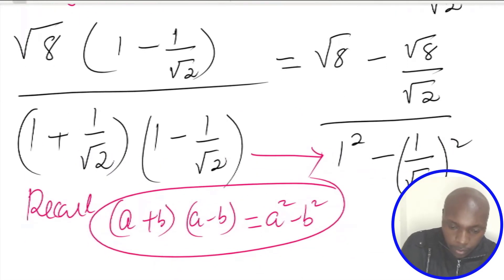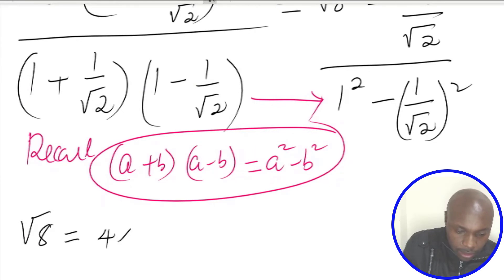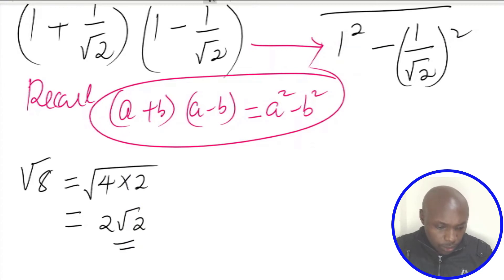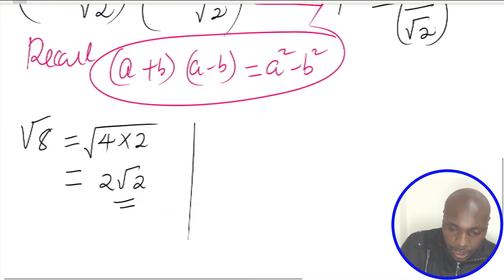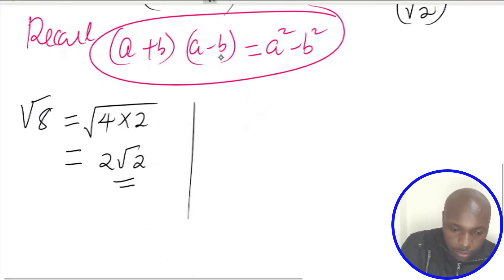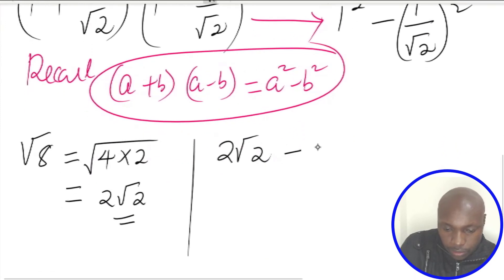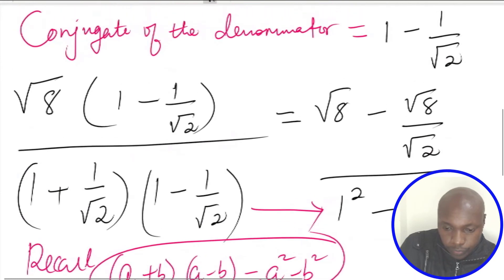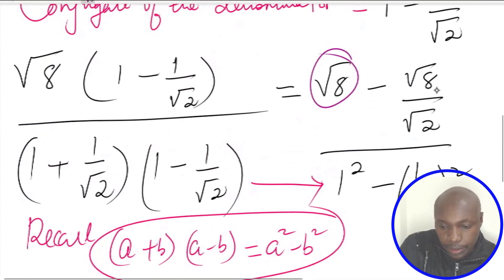In the numerator, root of 8 can be simplified: root of 8 equals root of 4 times 2, and root of 4 is 2, so root 8 equals 2 root 2. So the numerator becomes 2 root 2 subtract root 8 divided by root 2, which simplifies to 2 root 2 subtract root of 4, giving 2 root 2 minus 2.